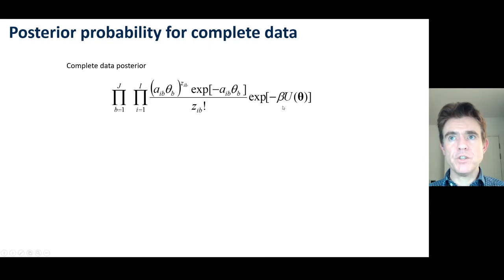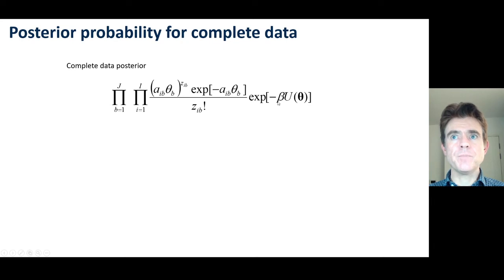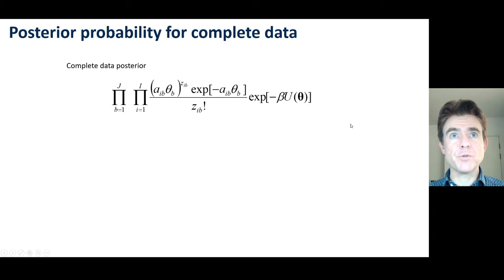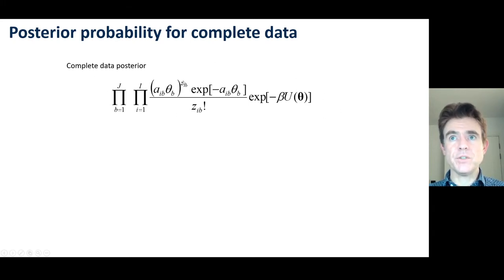If beta is equal to zero, that effectively switches off the prior entirely. When combined, we are now dealing with the posterior probability, in this case still for the complete data Z. It's the product over all the bins and all the pixels.